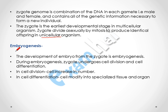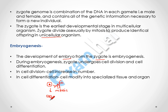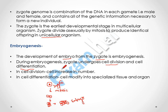The development of an embryo from the zygote is called embryogenesis. When the zygote divides mitotically and continuously forms a mass of cells, that mass of cells is called an embryo. The zygote is a single unicellular structure which divides mitotically — first into two cells, then four, then eight, and so on — forming a mass of cells called the embryo. During embryogenesis, the zygote undergoes cell division continuously, increasing cell number, and cell differentiation in which cells modify into specialized tissues and organs.